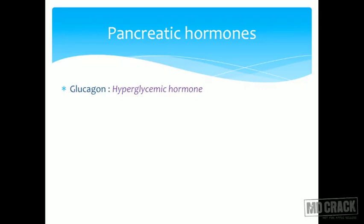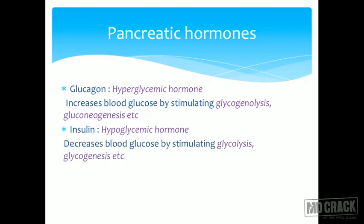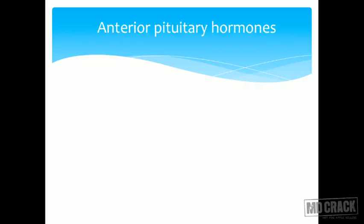Glucagon is a hyperglycemic hormone — it increases the blood glucose level by stimulating glycogenolysis and gluconeogenesis. Insulin is the hypoglycemic hormone — it decreases blood glucose levels by ensuring that glucose is either stored or catabolized via glycolysis, or stored as glycogen through glycogenesis.